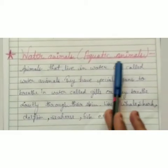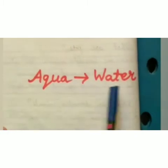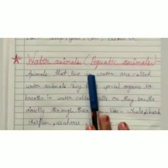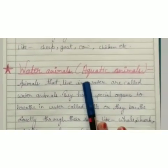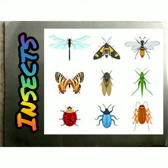Water animals are also called aquatic animals. What is aquatic? Aqua means water, so aquatic animals are the animals that live in water. Some birds can fly and some birds can't fly — like ostrich and emu can't fly, but sparrow and parrot can fly. Very tiny or small animals having six legs are called insects. Generally they have one or two pairs of wings, like ladybird and cockroach.